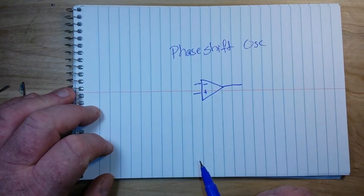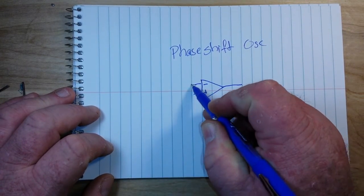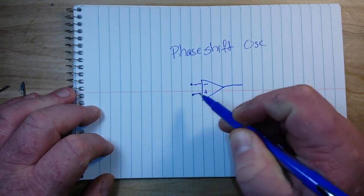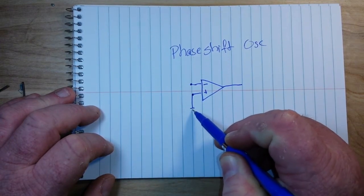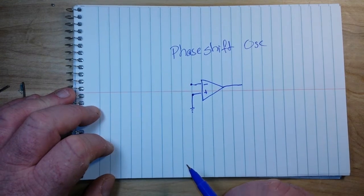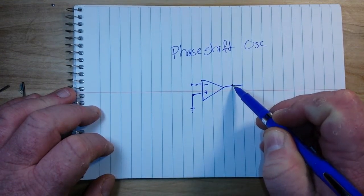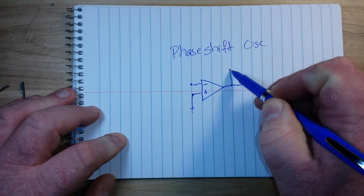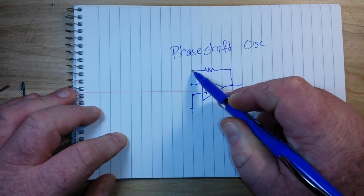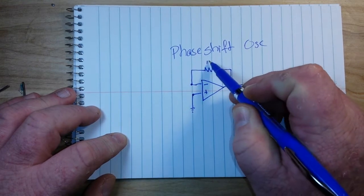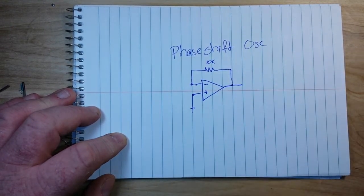And then from our output we're going to come back to our inverting input with a resistor. In this case we're using 10k. Now also from our output we are going to run three capacitors.